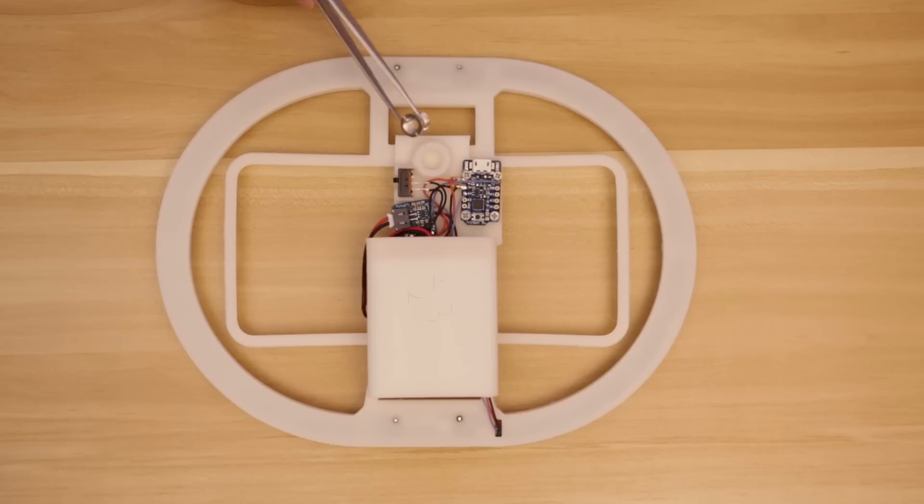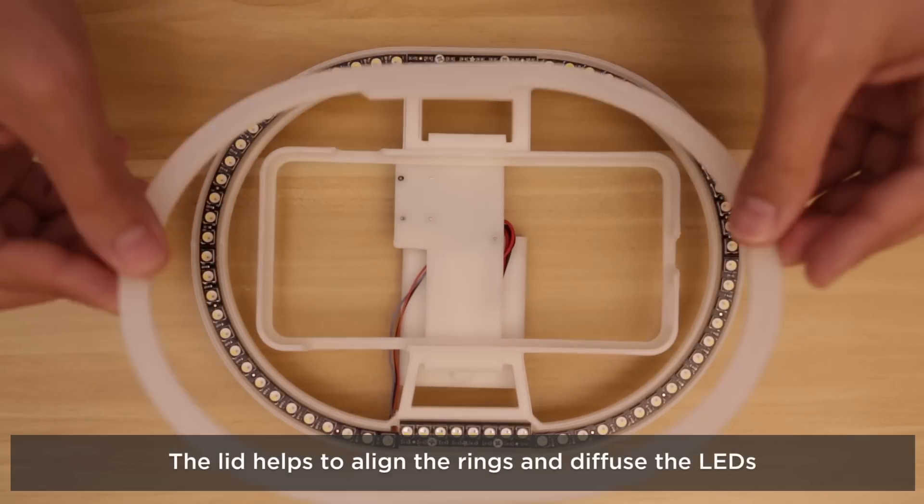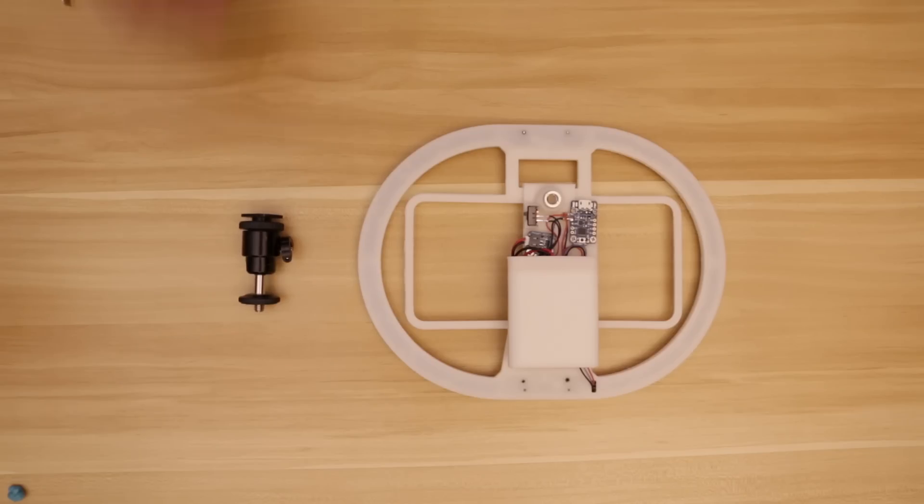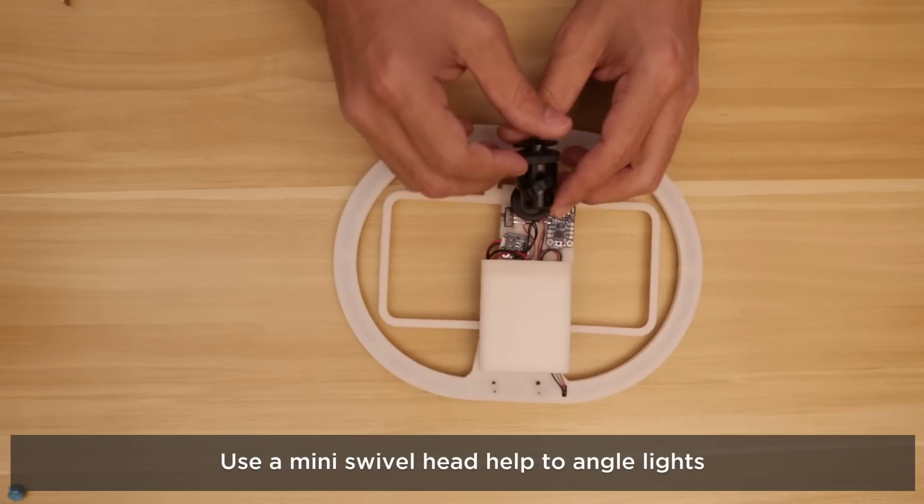This 3 eighths to a quarter twenty thread insert will make it easy to mount this to any tripod accessory. This cover provides some soft diffusion and a bit of protection to the Neopixels. This swivel head makes it easy to position the light upright so that we can attach it to a tripod or a selfie stick.